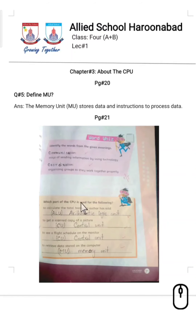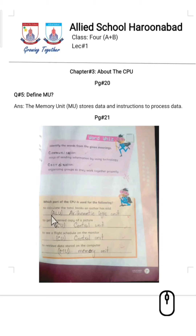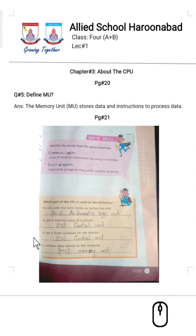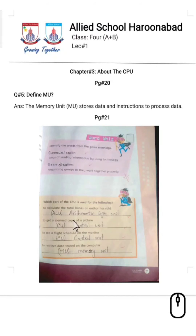Now moving to the next activity on page 21: which part of the CPU is used for the following tasks? You have to identify which of the three CPU parts is suitable for each task. The first task is: to calculate the total books an author has sold. For this calculation, we will use ALU — Arithmetic Logic Unit — because ALU's job is to perform calculations.